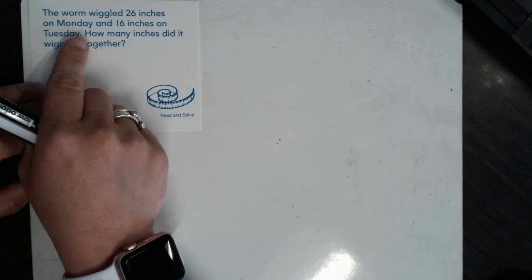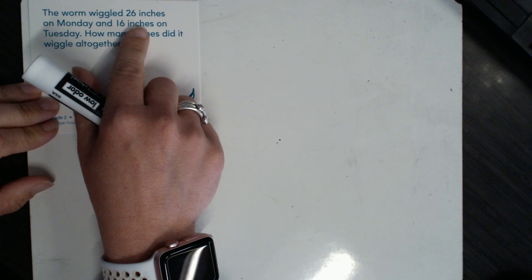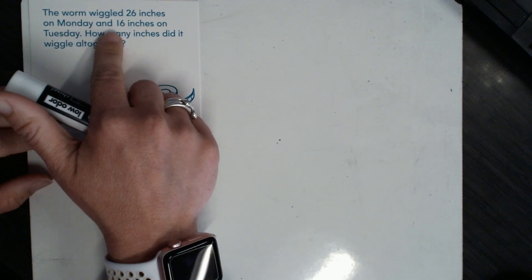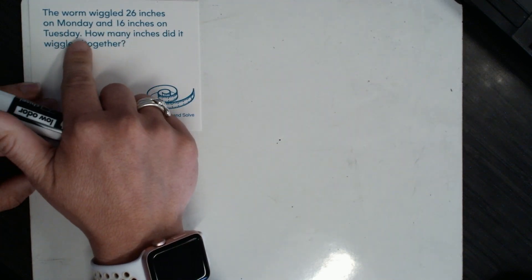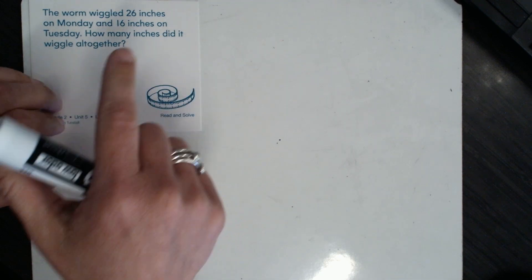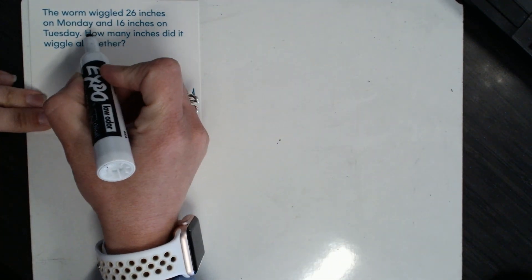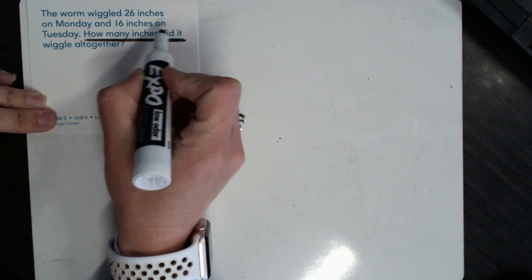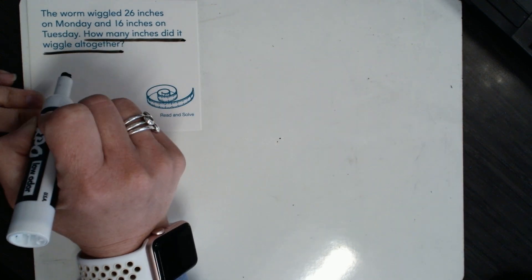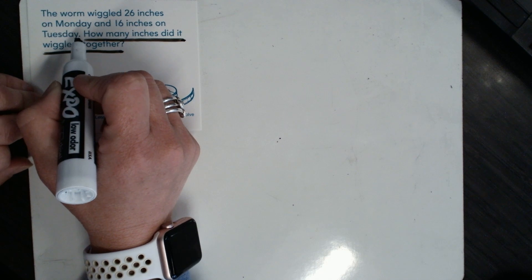The first one reads, the worm wiggled 26 inches on Monday and 16 inches on Tuesday. How many inches did it wiggle all together? Let's underline our question. How many inches did it wiggle all together? Let's go back and see.